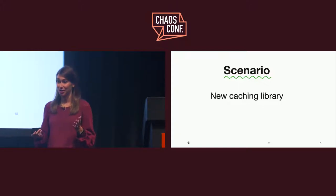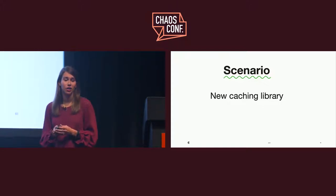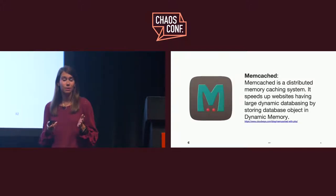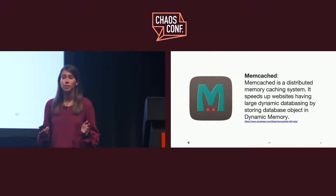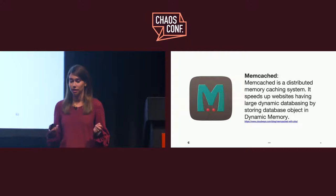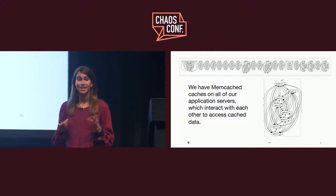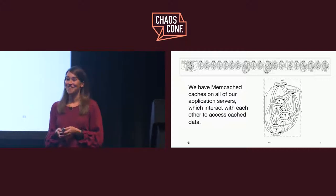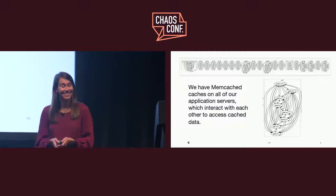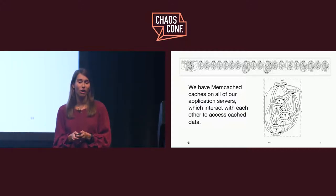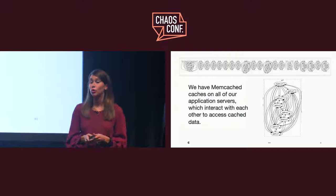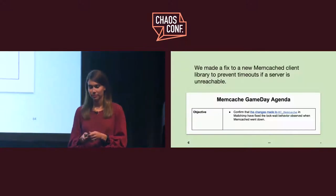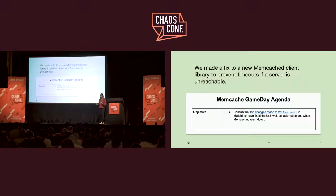The next validating changes scenario relates to a new caching library that we had added — the name of this caching system is Memcached. It's a distributed caching system, and it speeds up websites like MailChimp by reducing the number of times database requests are made. We have Memcached instances on all of our app servers, which talk to each other in order to access that cache data. We'd made a fix to the new client that we installed because we were seeing some timeouts, and we wanted to validate that our fix had actually worked. So we had a game day.